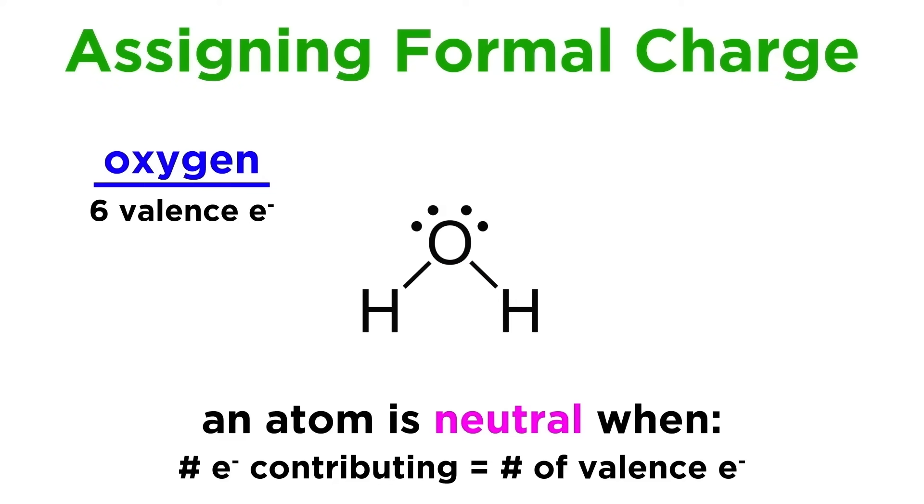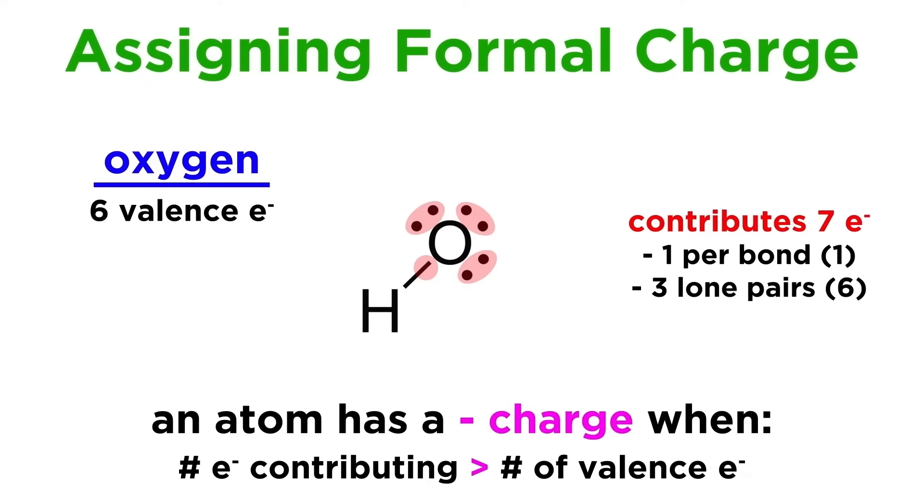Oxygen has six valence electrons, so when it makes two bonds and has two lone pairs, it is neutral. But if it makes only one bond and has three lone pairs, it contributes seven electrons, which is one more than its valence, so it will have a formal negative charge.